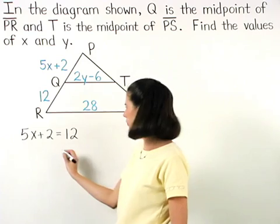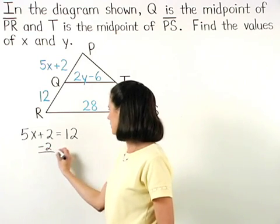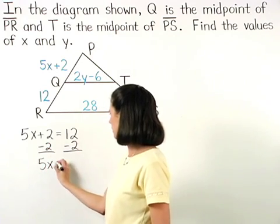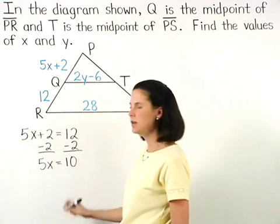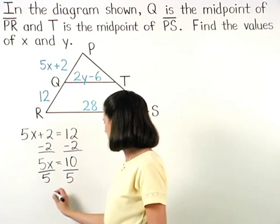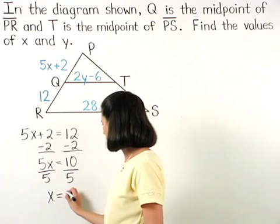Subtracting 2 from both sides gives us 5X equals 10, and dividing both sides by 5, we find that X equals 2.